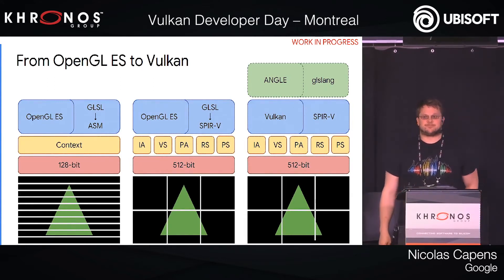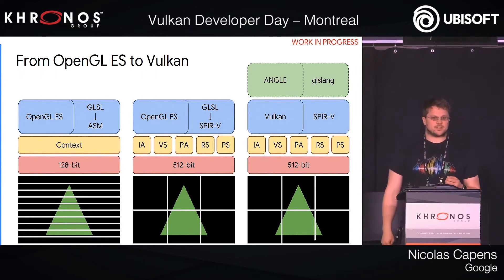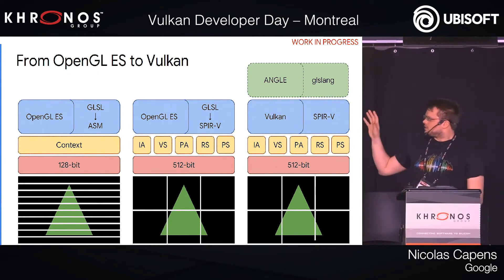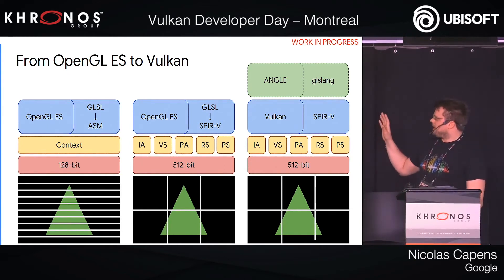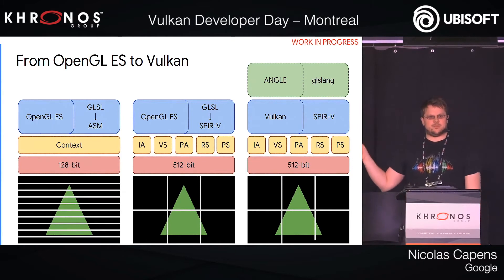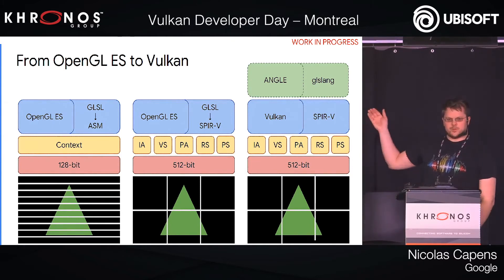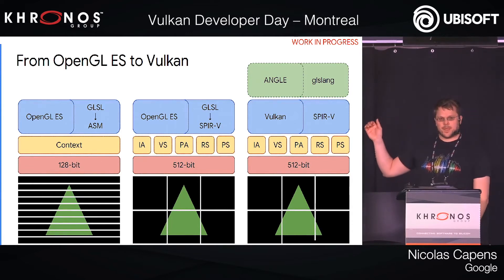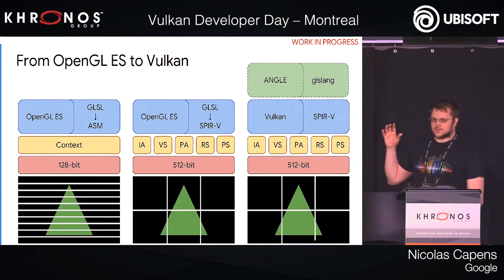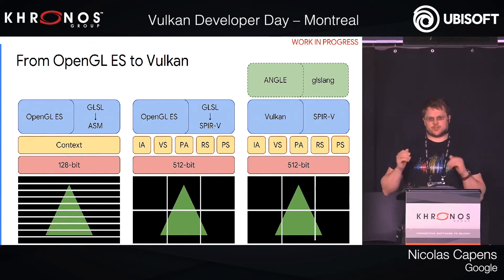Where do we want to go? We want to implement Vulkan. I think it makes sense that we're going to use the ANGLE project to keep supporting OpenGL ES, but internally SwiftShader will become entirely Vulkan-only. Currently you see the current architecture using an OpenGL ES API layer and GLSL to an internal assembly representation. With Vulkan, we would be ingesting SPIR-V. We can do an intermediate step where we take SPIR-V as the intermediate representation for an OpenGL ES implementation — that's one way to mitigate some of the risks of moving to the new architecture.